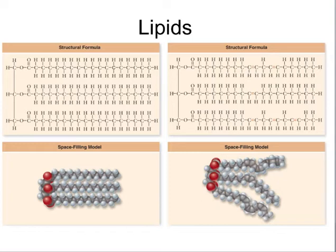This is a way to adapt to temperature. At warmer temperatures, you don't need a very fluid membrane because the temperature is already making things more fluid, so you will tend to have more saturated fatty acids in the cell membrane. When you have colder temperatures, things are getting stiffer, so you want to add fluidity to the membranes by adding unsaturated bonds or double bonds between the carbons.